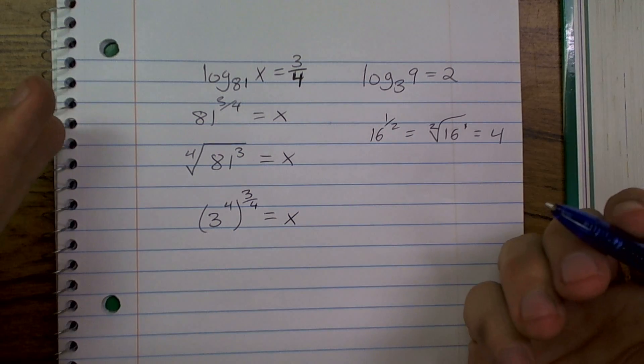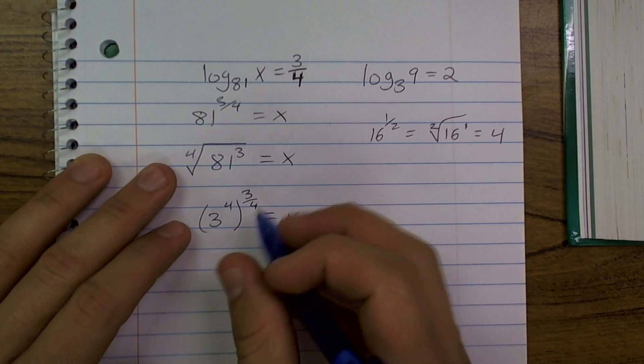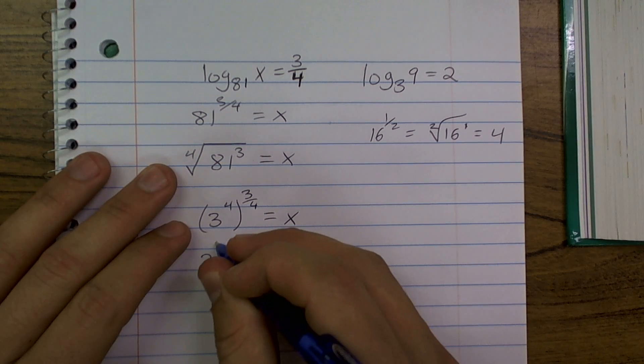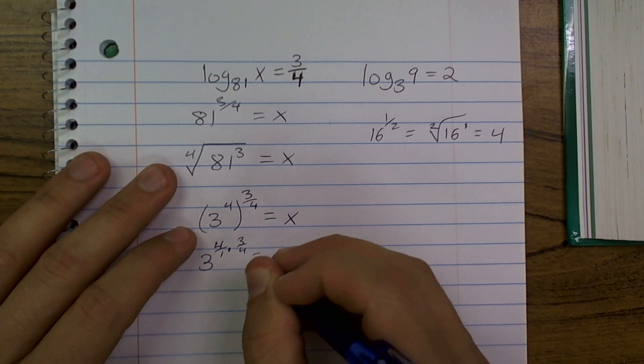Now, this is so powerful because I could write 81 as 3 to the fourth. Now I can use my power rule of exponents to multiply 4 over 1 times 3 over 4, which equals x.